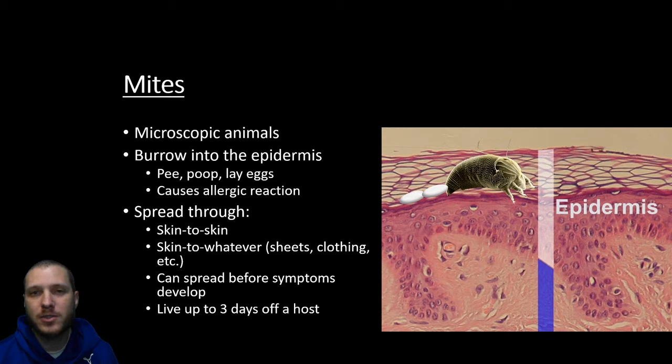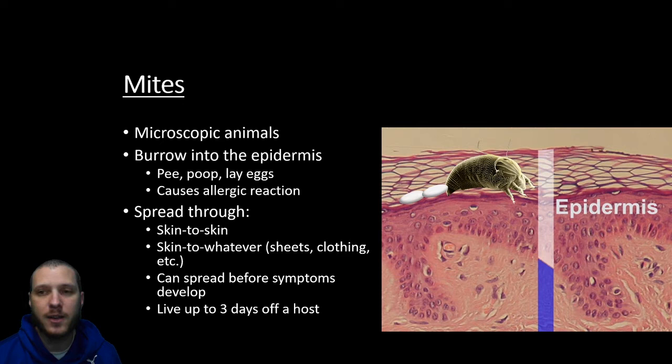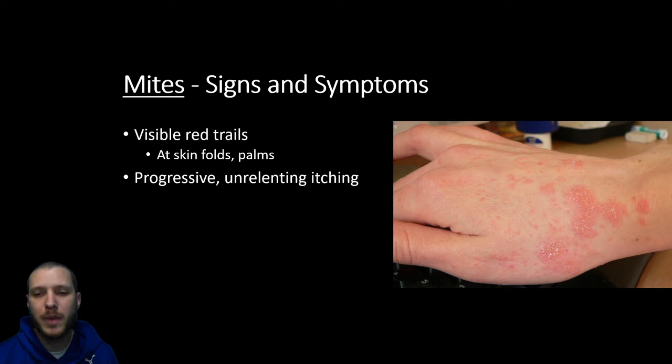The problem is it's going to spread before the symptoms develop, so it's going to be easily transmitted in a group of dense people sharing the same space — things like prisons or dormitories. They can live up to three days off the host, so it's hard to get rid of them. Signs and symptoms include a typical visible red trail where the mites burrow.